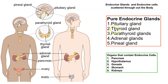We are going to start with our next pure endocrine gland, the thyroid gland. Remember, pure endocrine glands — their sole function is only to make and release hormones. That's it. They have no other job. So we're going to be looking at the thyroid gland next.